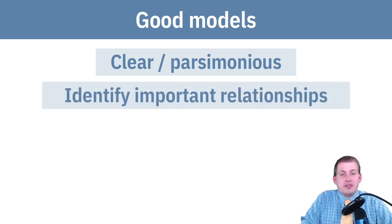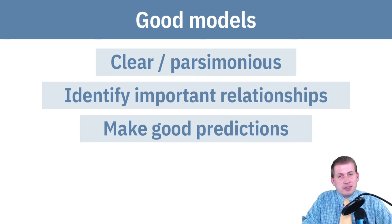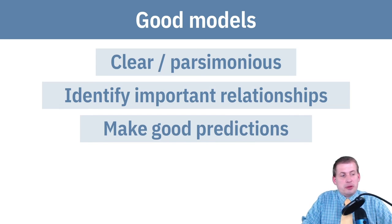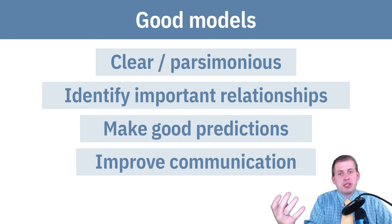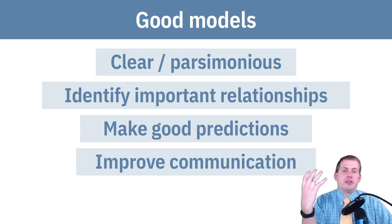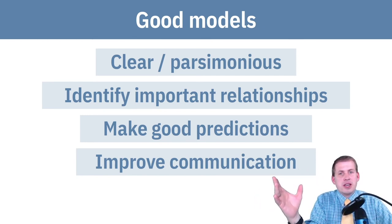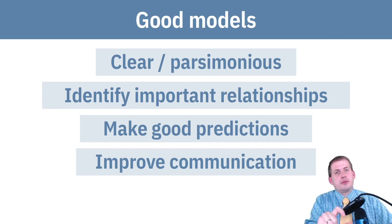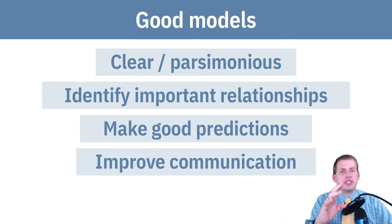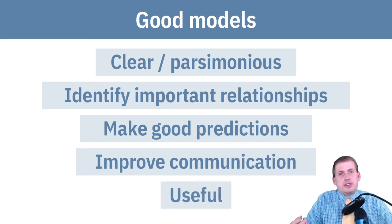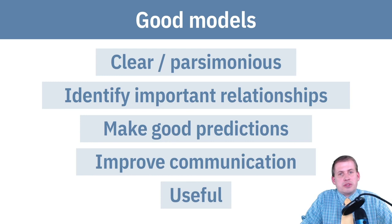If you're trying to model a specific thing, you can simplify it down and have a good parsimonious, simple model. Good models identify important relationships. They make good predictions. That's a good way of measuring how well the model works. And they improve communication. You can explain different social phenomena to people using statistical models, economic models, game theory models, all of these things. And it makes it easy for people to understand the different phenomena that you're trying to measure.